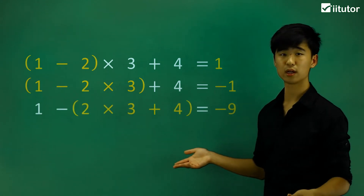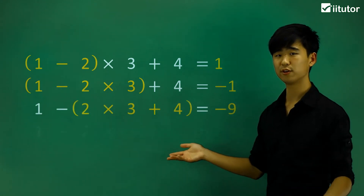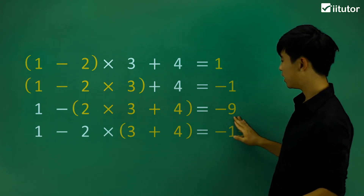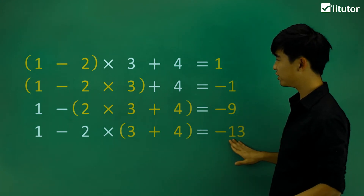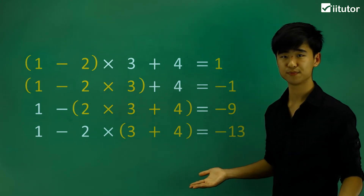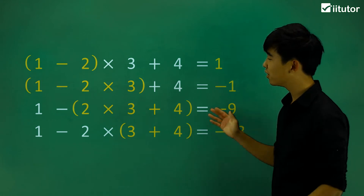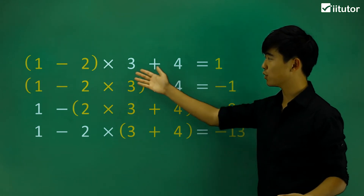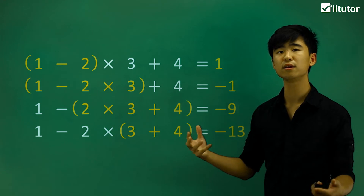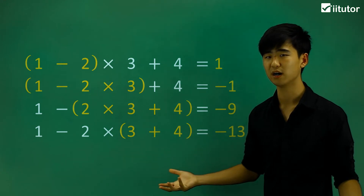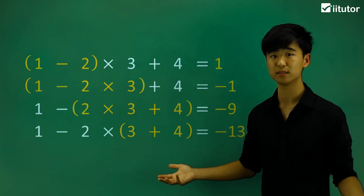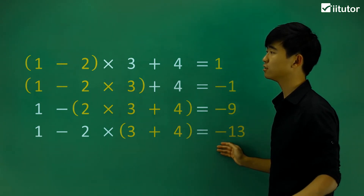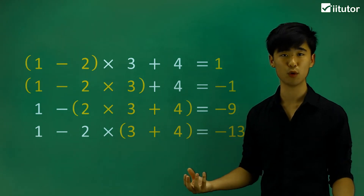Now let's take a look at a couple more. We have this one, and we also have this one, each of these giving us different values. So the one thing I want you to know here is that even though we have the same set of numbers, depending on where my brackets or grouping symbols are, it changes the value of my answers. So grouping symbols are actually very, very important.